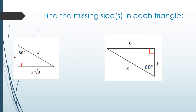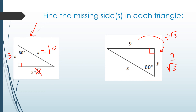Next example: the side opposite 60 is 5√3. Just remove the √3 to get the shorter side: 5. The hypotenuse is double: 10. Another example: the side opposite 60 is 9. Divide by √3 to find the shorter side: 9/√3, which you can rationalize. The hypotenuse is double: 18/√3, which simplifies to 6√3. And 9/√3 rationalized is 9√3/3 = 3√3.